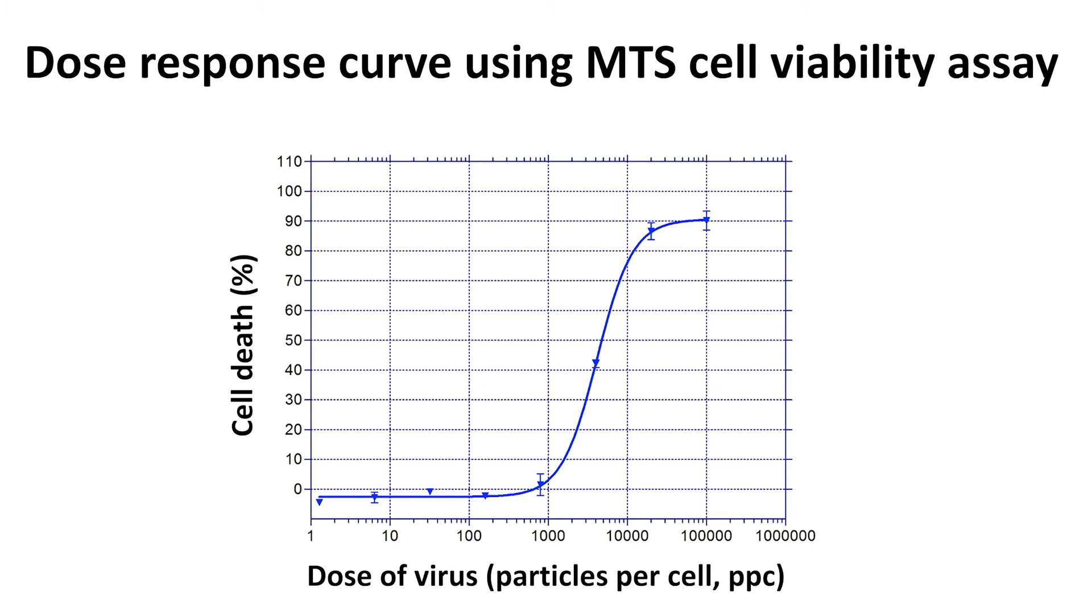This type of presentation is called a dose-response curve and allows us to calculate the EC50 value, a commonly used measurement, which is the dose that kills 50% of the cells.